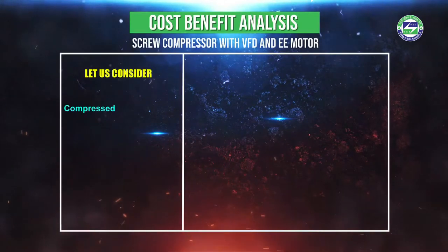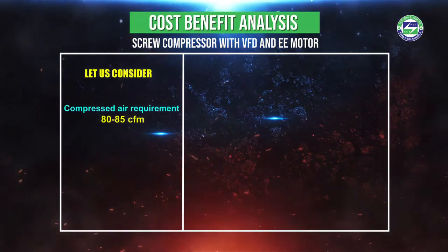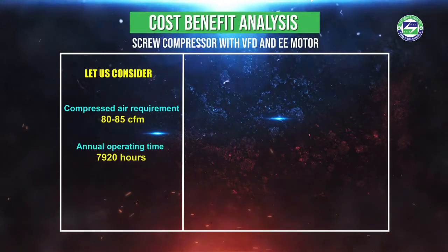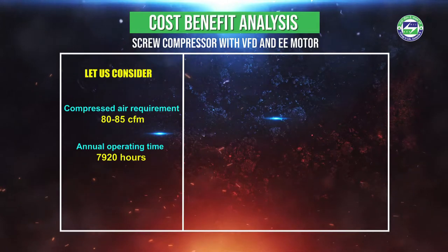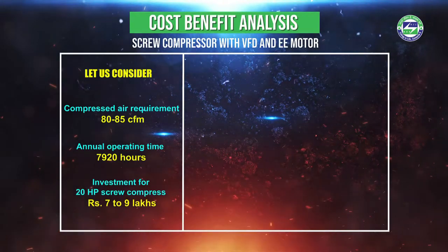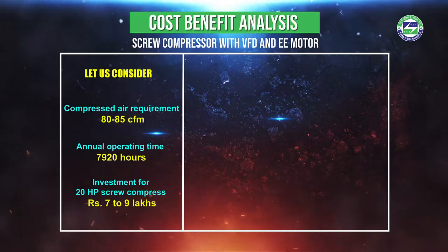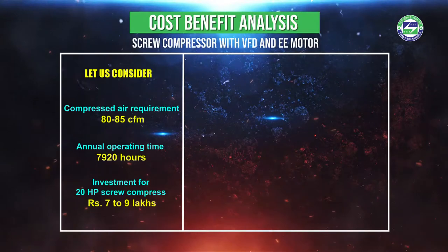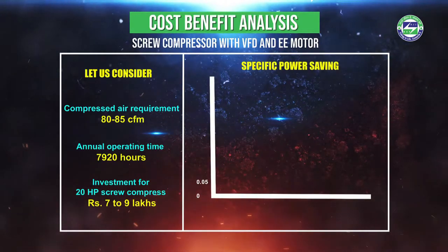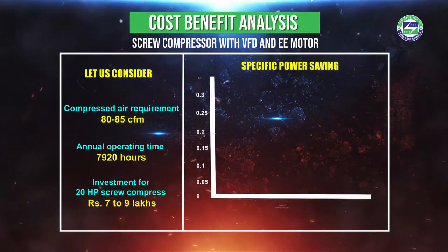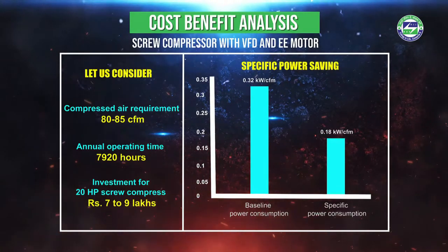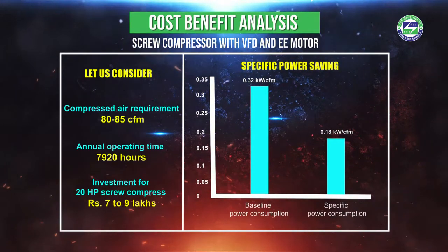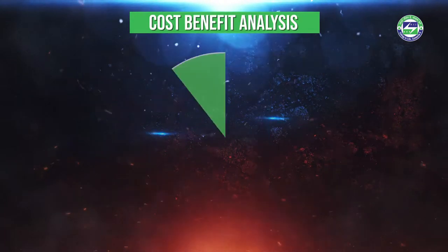To understand the cost-benefit analysis, consider an 80 to 85 CFM compressed air requirement with an annual operation of 7,920 hours. A 20 horsepower screw compressor is suitable for this requirement, which will require an investment in the range of rupees seven to nine lakhs. The installation will lead to a specific power consumption of around 0.18 kilowatt per CFM, from the baseline level of around 0.32 kilowatt per CFM.